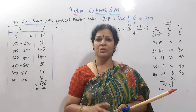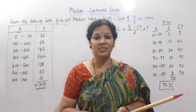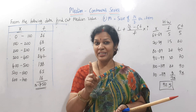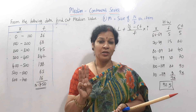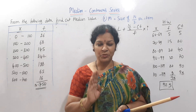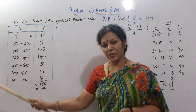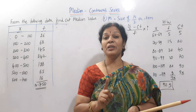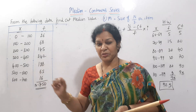We are making a median value. We are making steps in the discrete series. Step number 1: arrange in ascending order. Step number 2. Step number 3: size of (n+1)/2 th item. Now here, for the continuous series, we do not need to do ascending order. Step number 1: we are making a cumulative frequency.